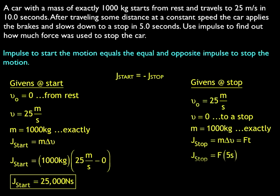When the motion is over, I have a lot of givens, but I want to choose a formula that has force in it because that's what I'm after, force and time. So the impulse to stop is equal to force times time. So the stopping impulse is force times 5 seconds.